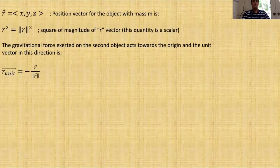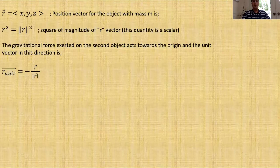To write Newton's gravitational law in vector form, we will use the position vector r of the object and the unit vector for r. The gravitational force exerted on the second object acts towards the origin, so it is downward, and that is why it is negative.